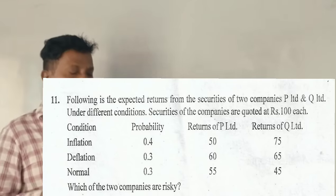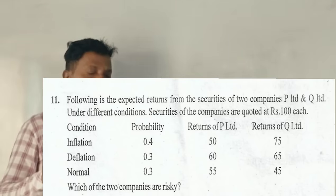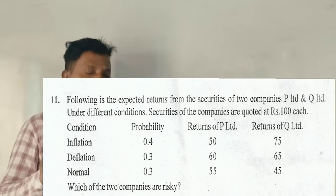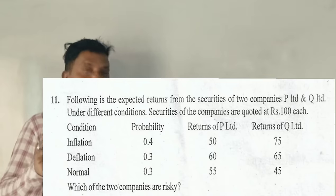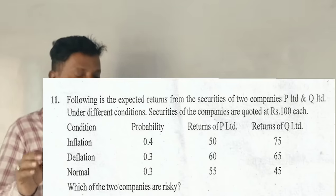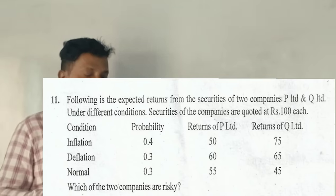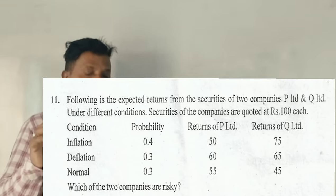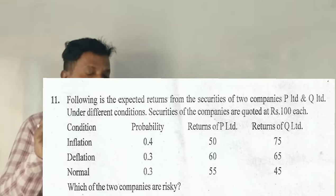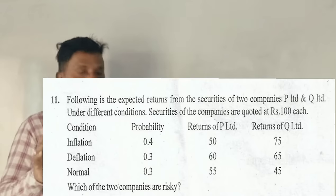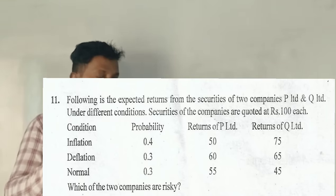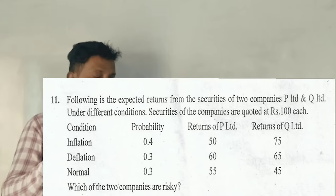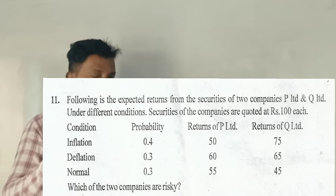The following is the expected returns from securities of two companies, P Limited and Q Limited, under different conditions. Securities of the companies are quoted at Rs. 100 each. The conditions are: inflationary, deflationary, and normal.